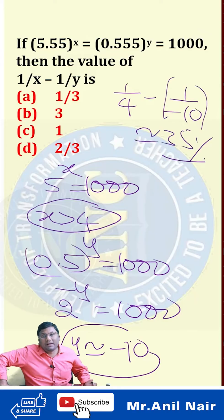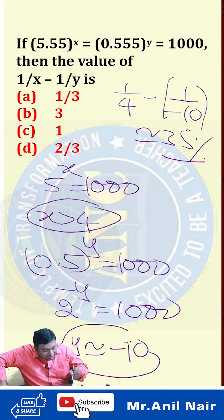1 by 4 is 25 percentage. 1 by 10 is 10 percentage. Which option is closer to 35 percentage?